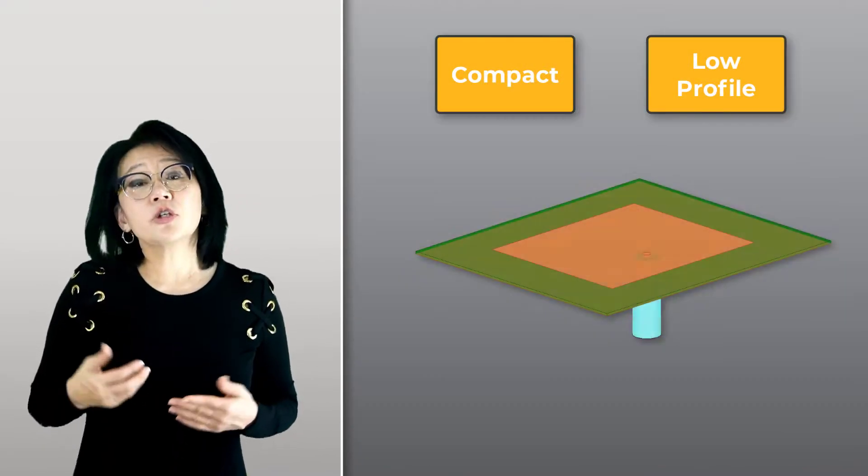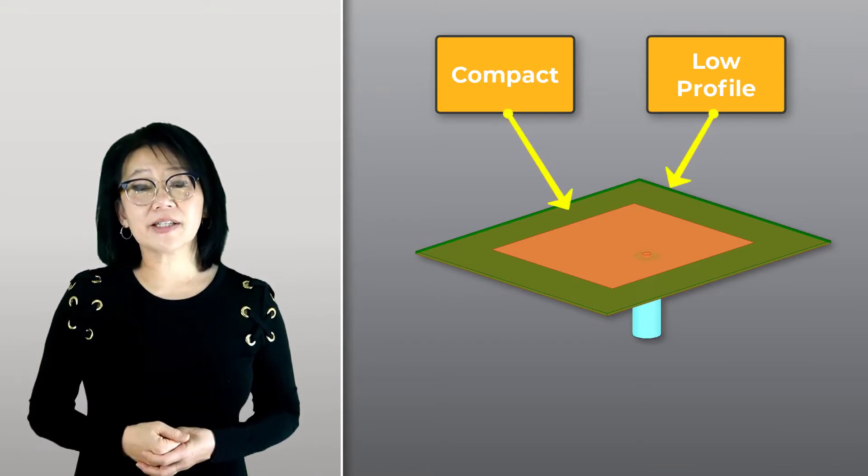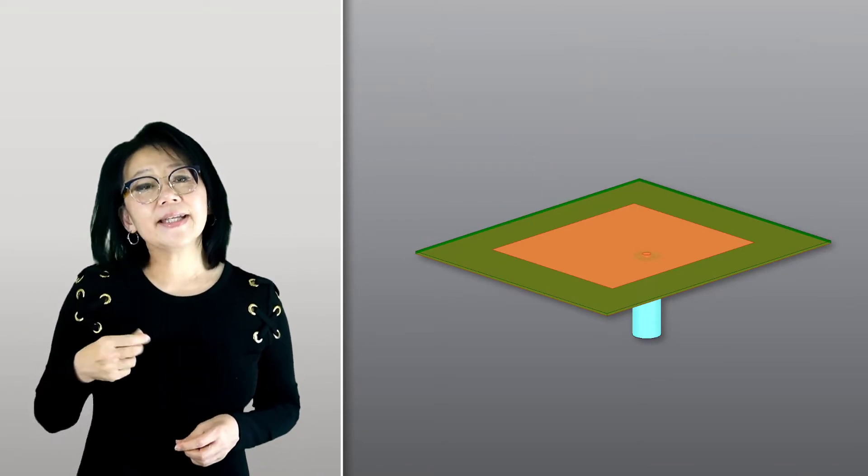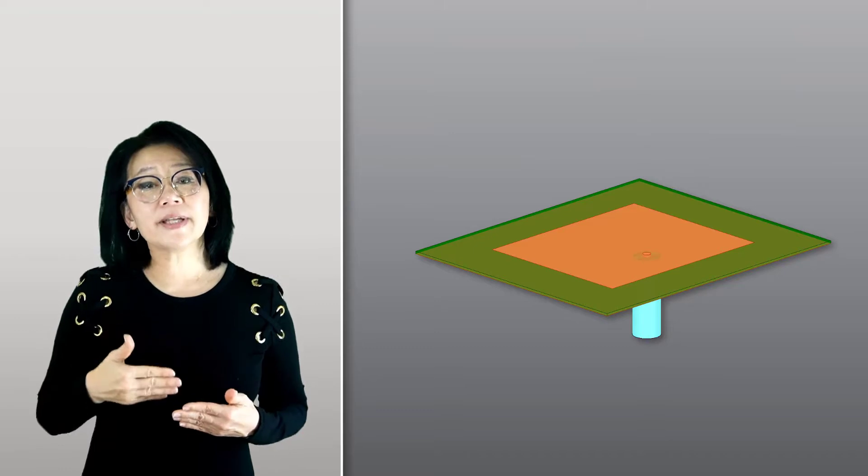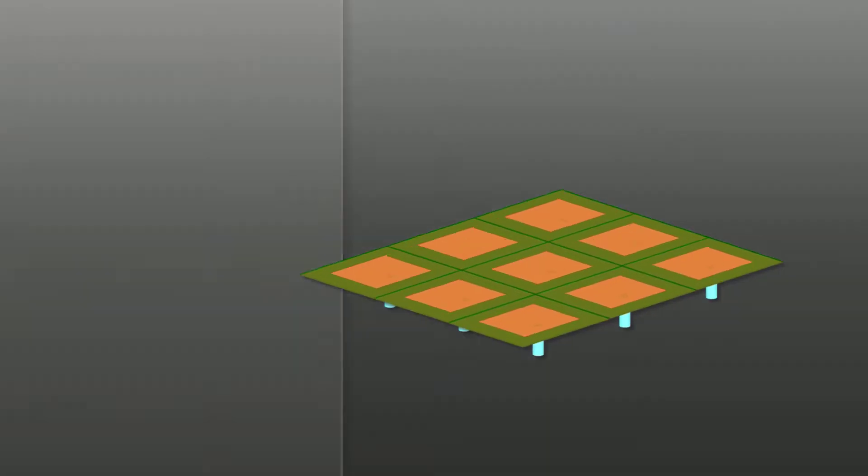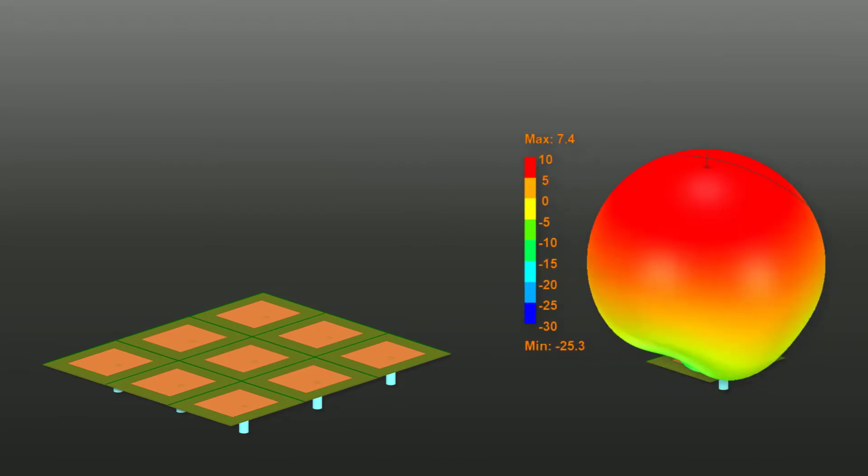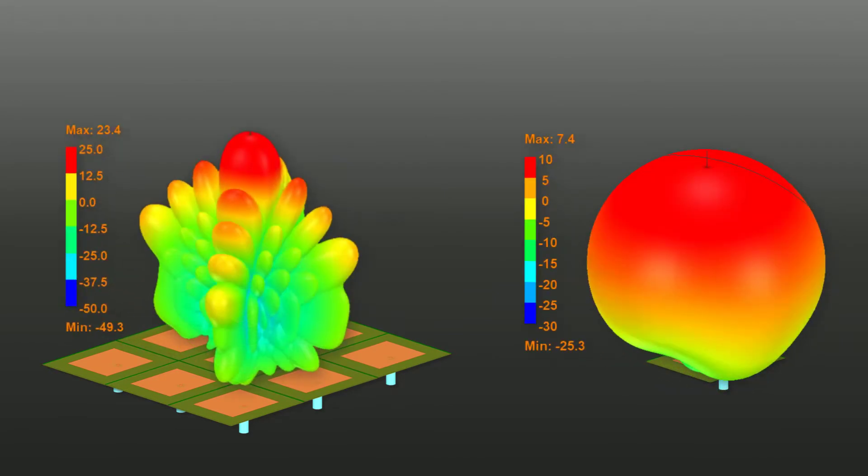We use the planar microstrip patch antenna element. In this video, we're going to use that element and introduce an array of them. An array is needed as a result of the demand for increased gain.